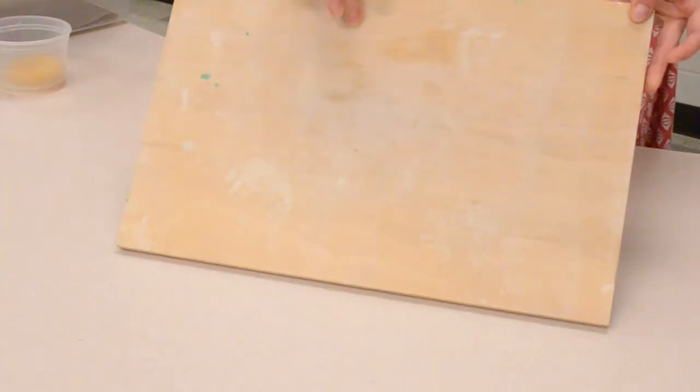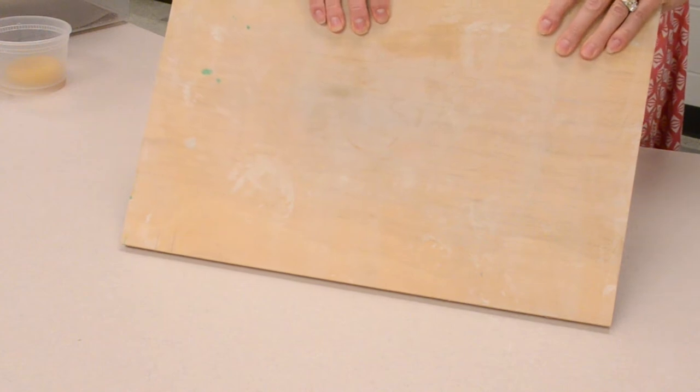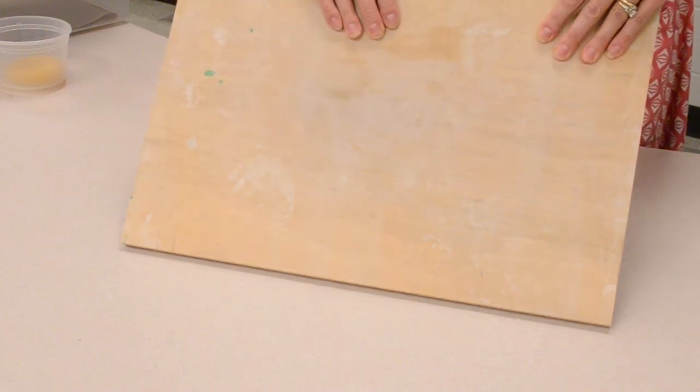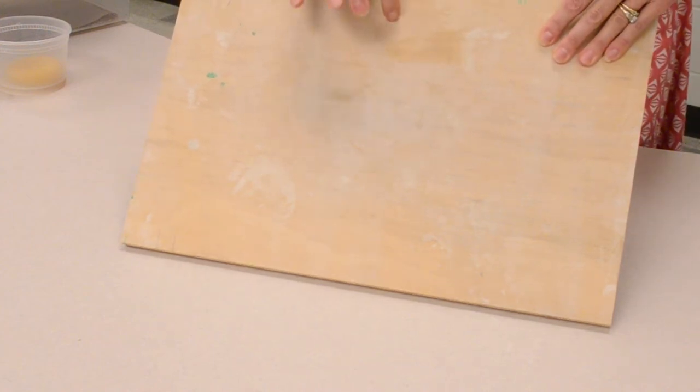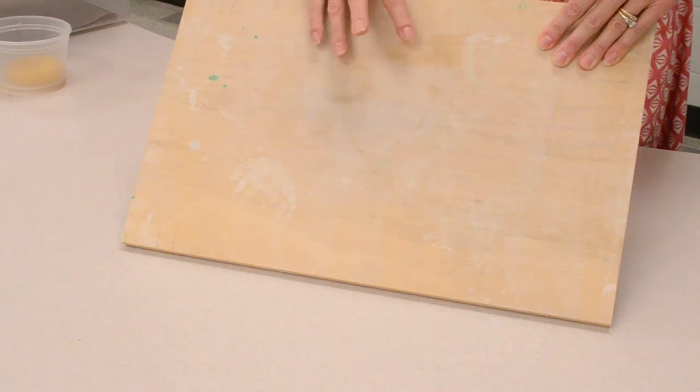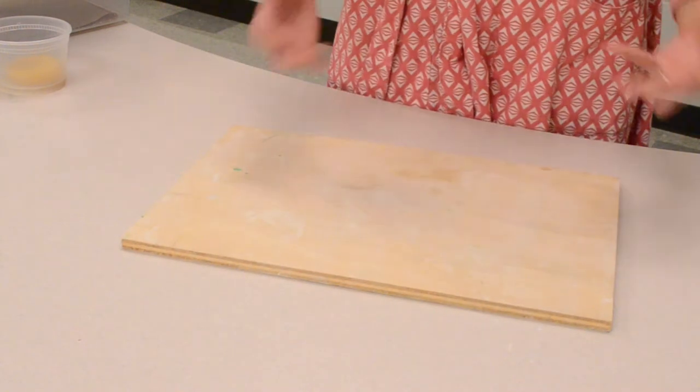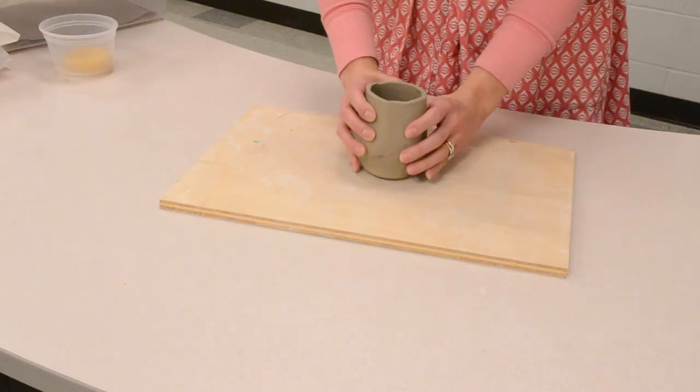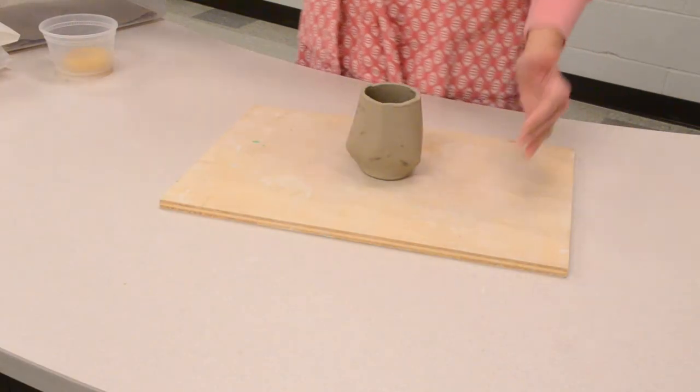I like to use a wear board like this in the classroom or for my personal work. Make sure that you get a harder type of wood or plywood. Don't get a wood that's too soft because it will mold because we're dealing with moisture.